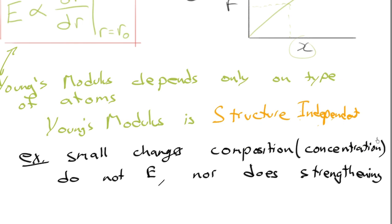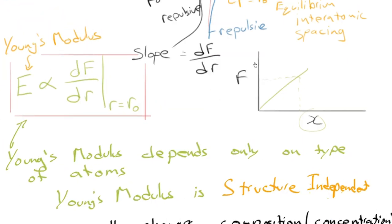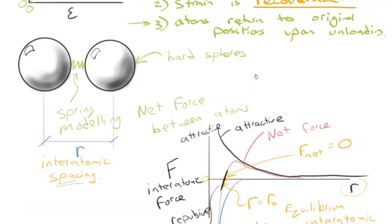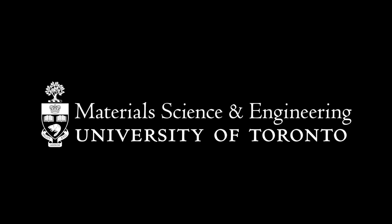Nor does other stuff that we'll talk about later, like strengthening. So we'll see that you can dramatically increase the strength of a metal alloy, but you will not change the Young's modulus. Why? Because it's structure-independent. Because at the end of the day, the Young's modulus only depends on the type of atoms that you have. And if you haven't changed the type of atoms, you won't change the Young's modulus. Oh, it's so beautiful. All right. Thank you very much. Thanks, everyone.